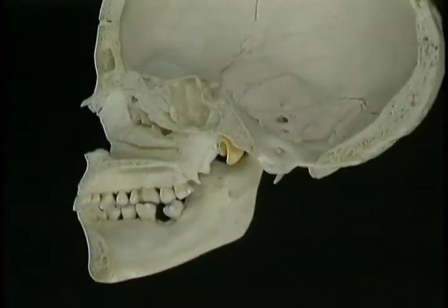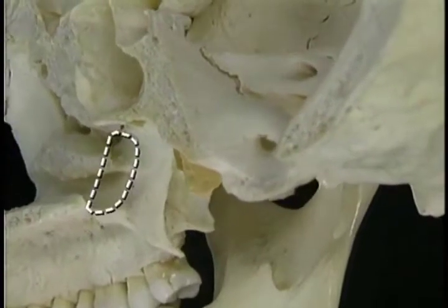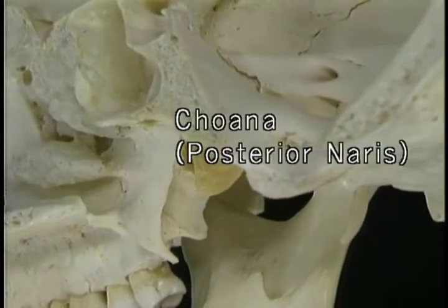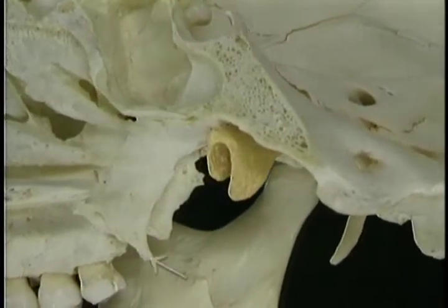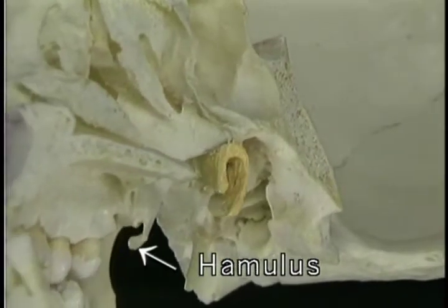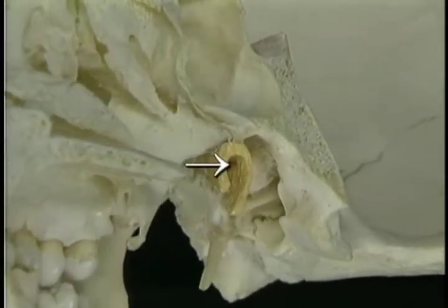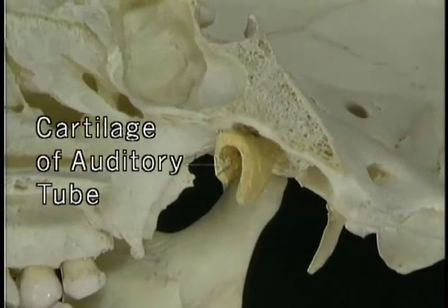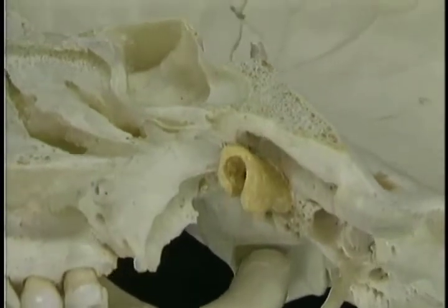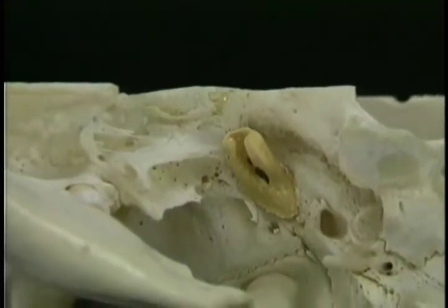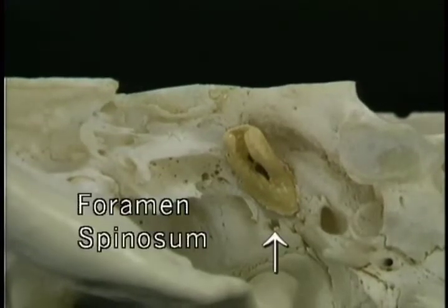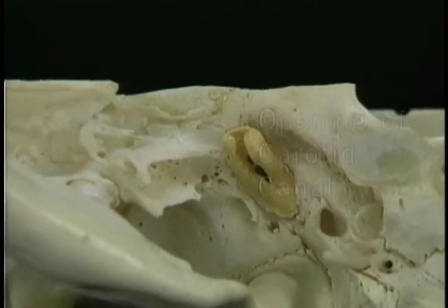Now that we've seen the bony features of the nasal cavity, we'll look at the bones that surround the nasopharynx. Here's the posterior opening of the nasal cavity, the choana or posterior naris. Its lateral wall is formed by the medial pterygoid plate, which ends below in the hamulus. The cartilage of the auditory tube forms an incomplete tube, open on the underside. Close to the medial end of the cartilage are the foramen ovale, foramen spinosum, the opening of the carotid canal, and the jugular foramen.